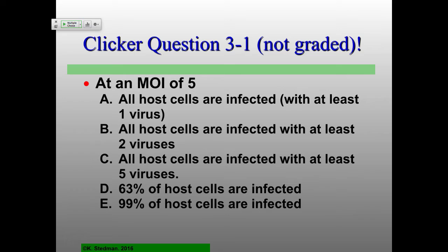I did actually upload the scores from last time, even though they're not going to count. MOI 5: all host cells are infected with at least one virus, at least two viruses, at least five viruses — 63% or 99%? Please feel free to talk about this with your neighbors. That's part of the idea here. And also remember everything from last time, all 48 hours ago.